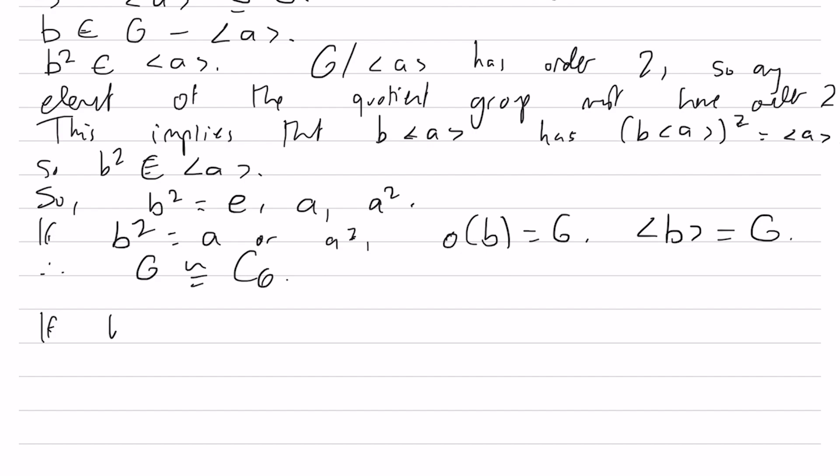So what if B squared is the identity? Well, also observe that BAB inverse is going to be in this subgroup ⟨A⟩, this subgroup generated by A. Why is that? Well, remember we just saw that this is a normal subgroup, and that's just the definition of normal subgroup. So BAB inverse is going to be E, A, or A squared.